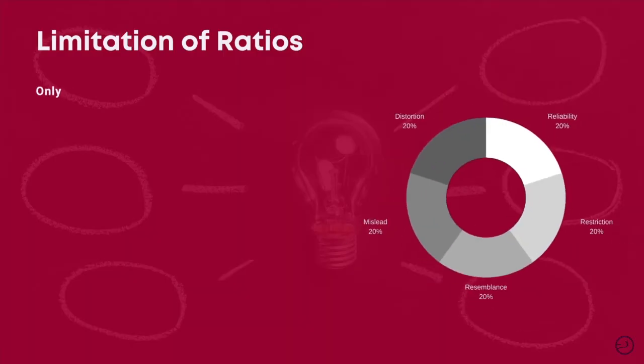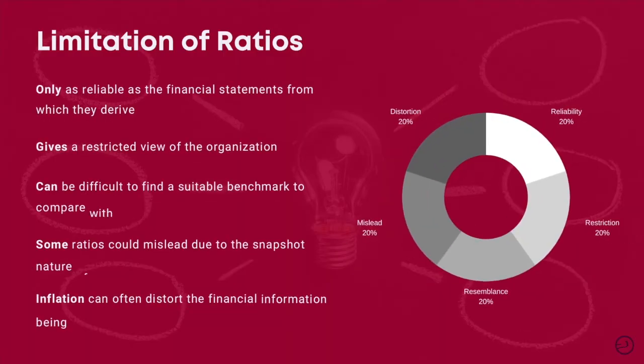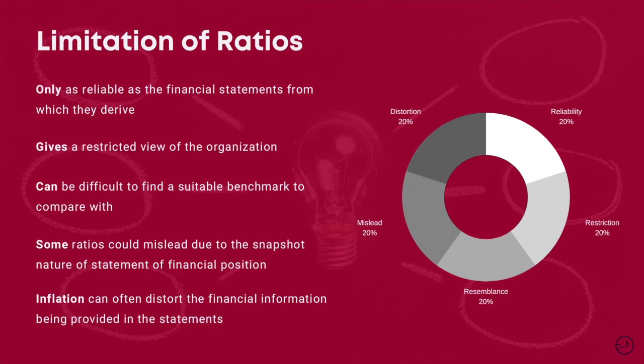While ratios are popular, there are limitations. For example, if financial statements are not prepared accurately, ratios cannot be relied upon. Additionally, ratios can be restrictive and do not take all the intangibles into account. It could also be difficult to find the right type of organization to compare to. Some balance sheet ratios could be misleading because a balance sheet is prepared at a specific time, whereas the actual financial position may be different at the time of conducting the ratio analysis. Lastly, if inflation has occurred between periods, then real prices are not reflected in the financial statements.